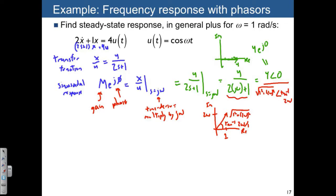Let me write this over here. M·e^(jφ), or same thing as M∠φ, is equal to 4/√(1² + (2ω)²). Here we have the angle of the numerator, which is 0, minus the angle of the denominator. So we have 0 - arctan(2ω).